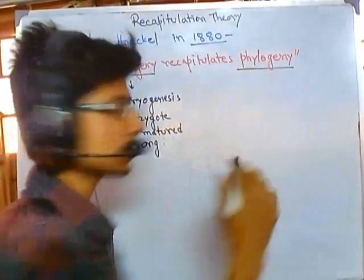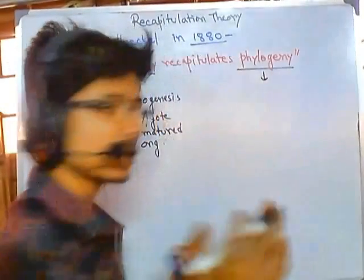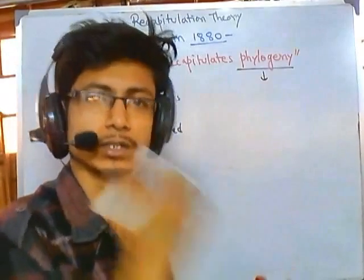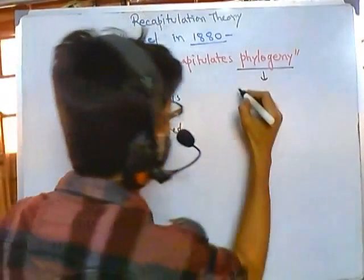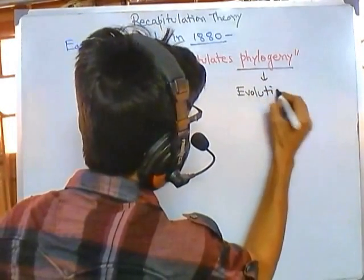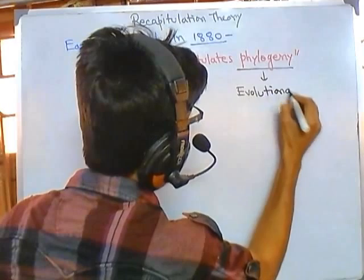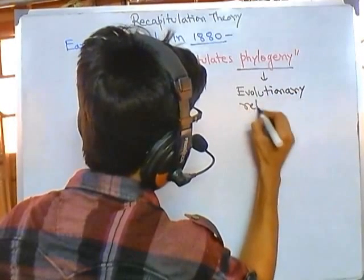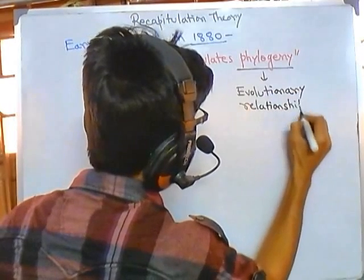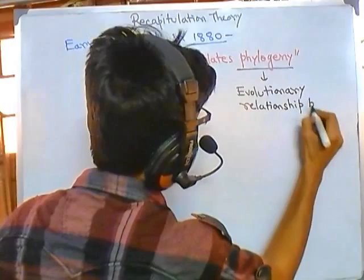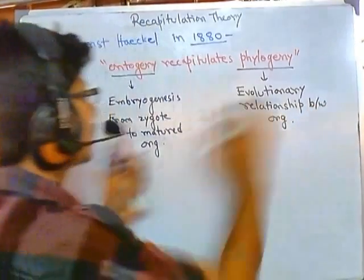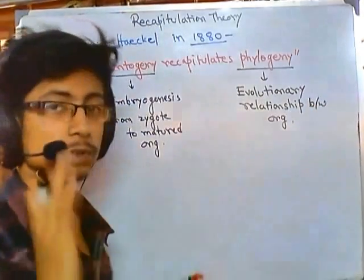Phylogeny means the relationship between organisms in evolutionary history — the evolutionary relationship between organisms. These are the two things you need to know.